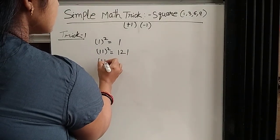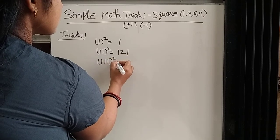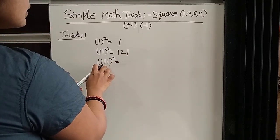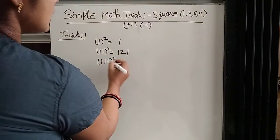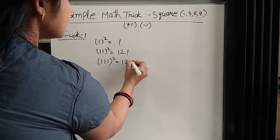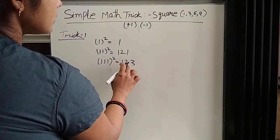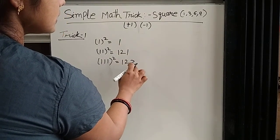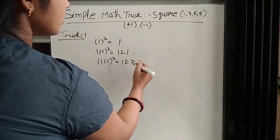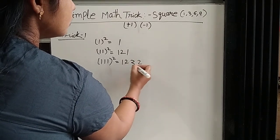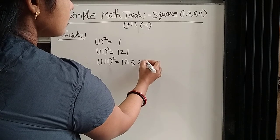Then plus 1, minus 1: 2 minus 1 is 1. Suppose three 1s: write 1, 2, 3. So 1 plus 1 is 2, 2 plus 1 is 3. Now in minus 1 form: 3 minus 1 is 2, then 2 minus 1 is 1.